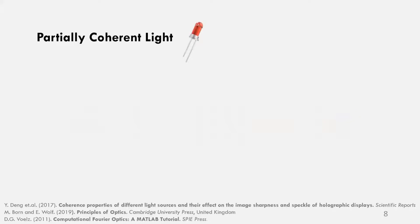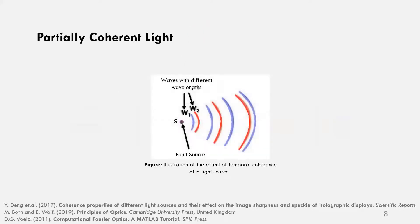We propose to use low coherence for light source, specifically partially coherent light, like this LED. Partial temporal coherence of light tells how monochromatic a light source is.